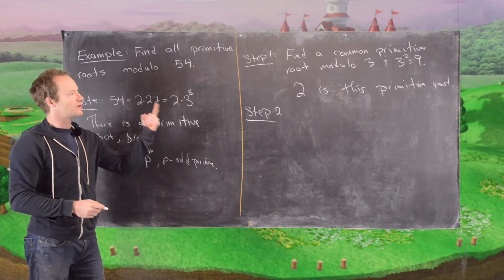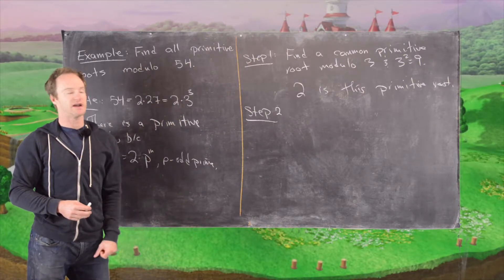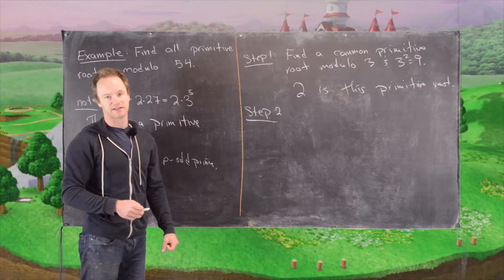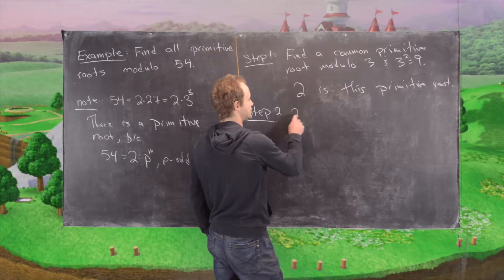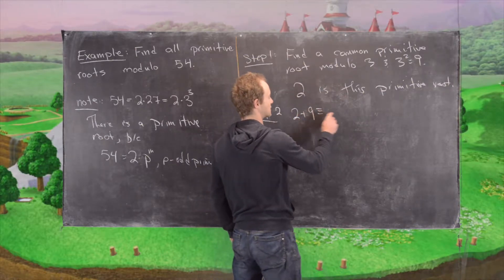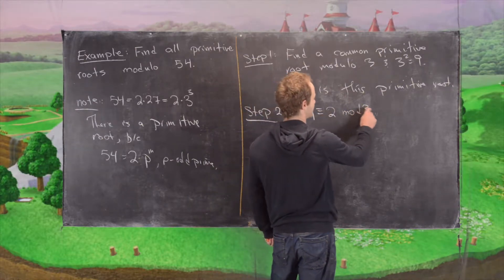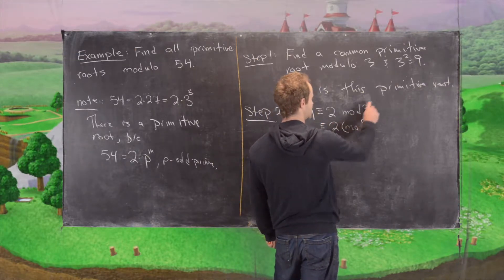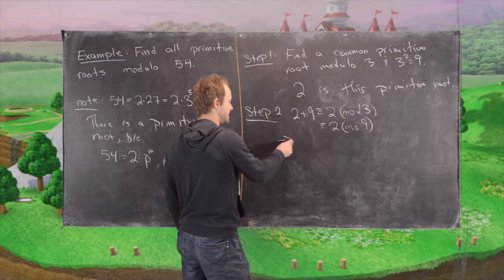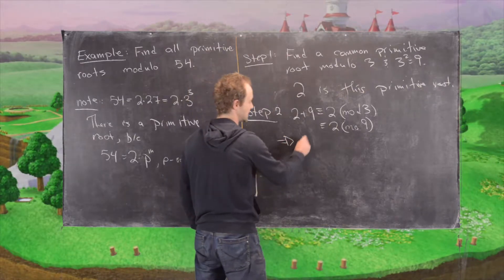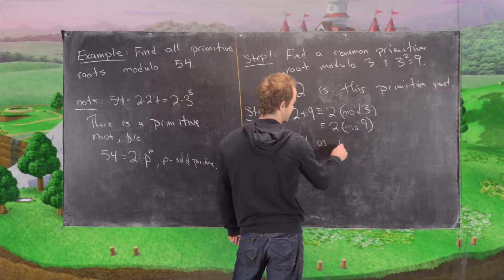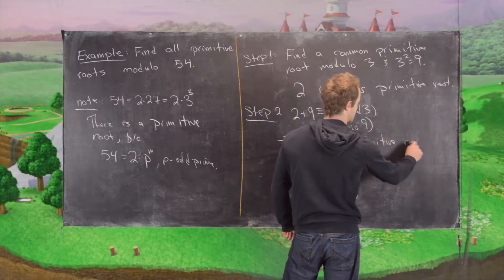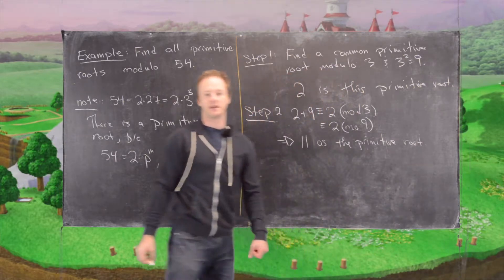but we can choose 2 plus 3 or 2 plus 9 and that will work. And so we'll work 2 plus 9. And so notice that 2 plus 9 is congruent to 2 mod 3 and it's congruent to 2 mod 9. So that means we'll choose 11 as the primitive root that we need.